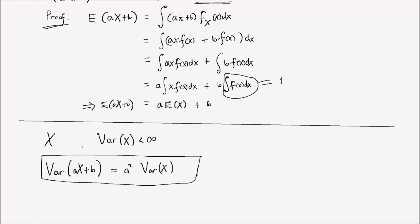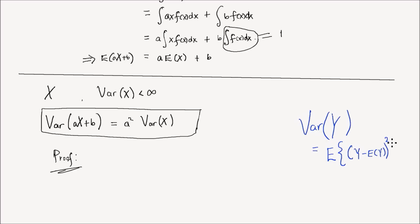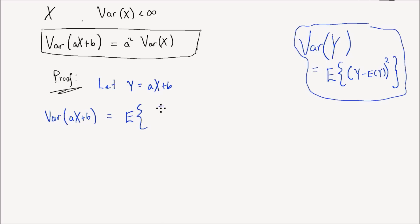Let me show a quick proof. Recall that the variance of a random variable y by definition is the expectation of (y minus the expectation of y) squared. Let y equal a·x + b. So the variance of a·x + b equals the expectation of (a·x + b minus the expectation of a·x + b) squared.